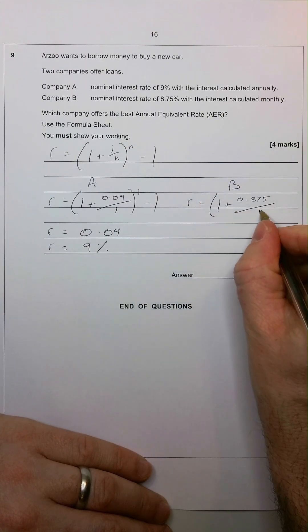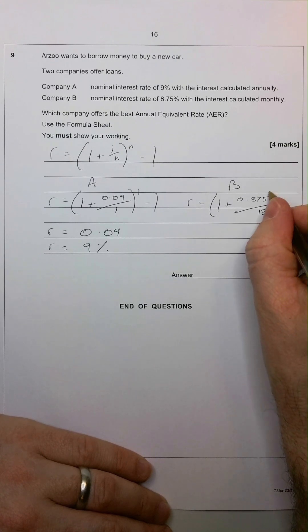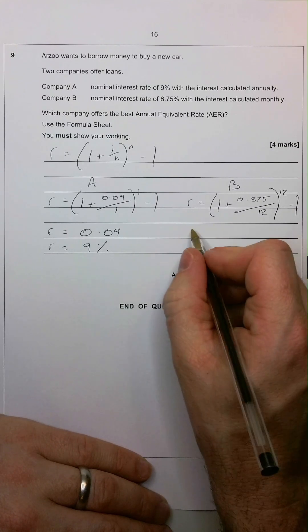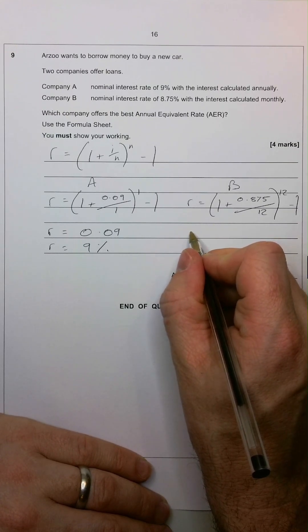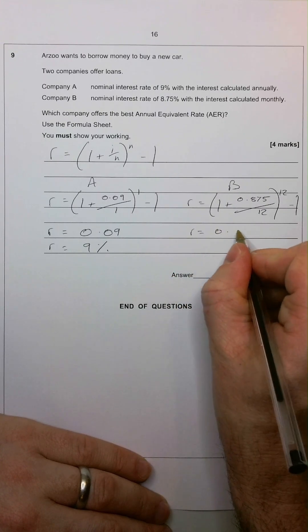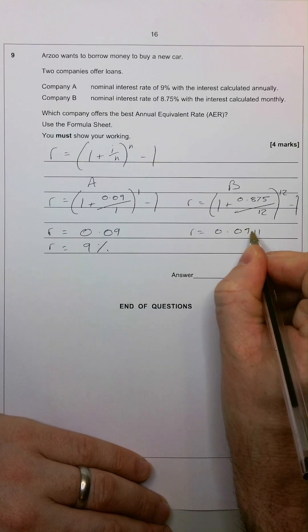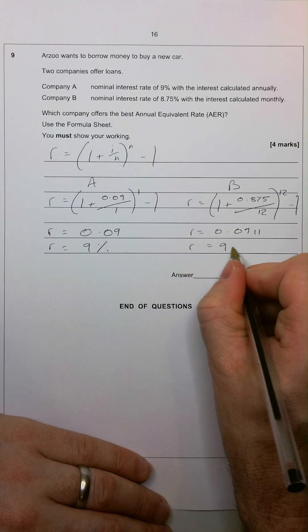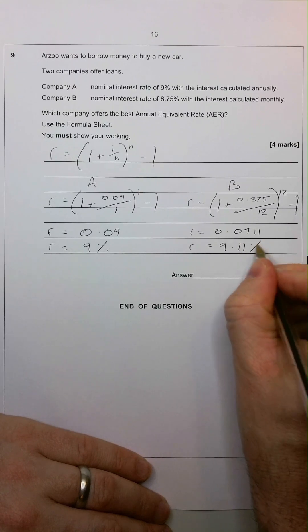So we're going to do 12 to the power of 12, of course, minus 1. And once we've calculated that in our calculator, we'll have the AER of 0.0911, or 9.11%.